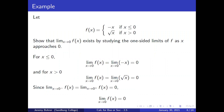Let f(x) equal negative x if x is less than or equal to 0, and the square root of x if x is greater than 0. Show that the limit as x approaches 0 of f(x) exists by studying the one-sided limits. For x less than or equal to 0, the limit as x approaches 0 from the left of f(x) equals the limit as x approaches 0 of negative x, which is 0. And for x greater than 0, the limit as x approaches 0 from above of f(x) equals the limit as x approaches 0 of the square root of x, which again equals 0, assuming we are approaching from above. If we are approaching from below, the limit does not exist because the square root of a negative number does not exist.